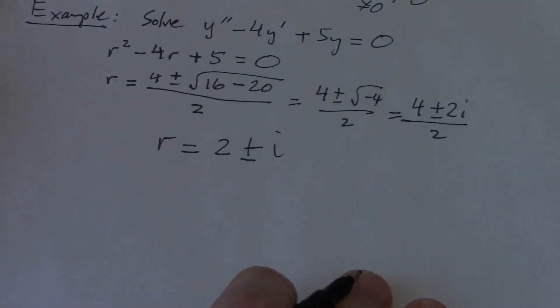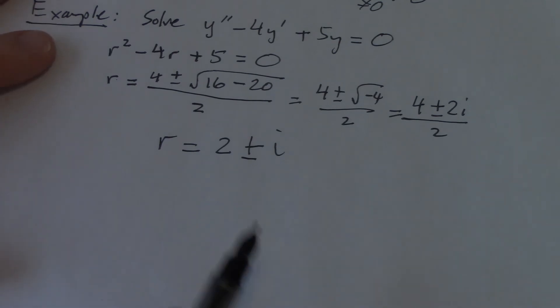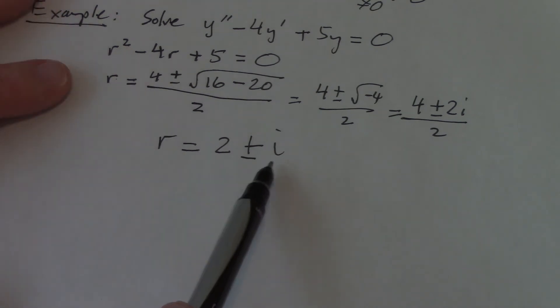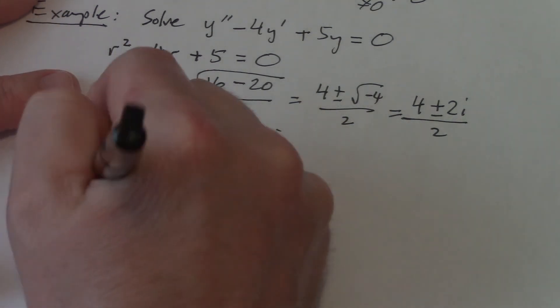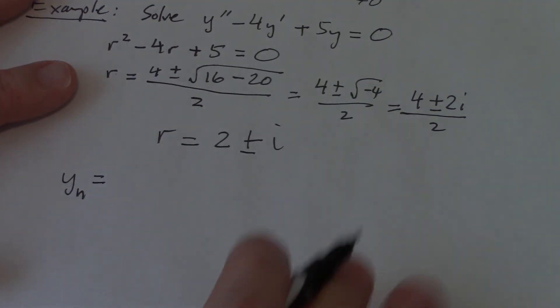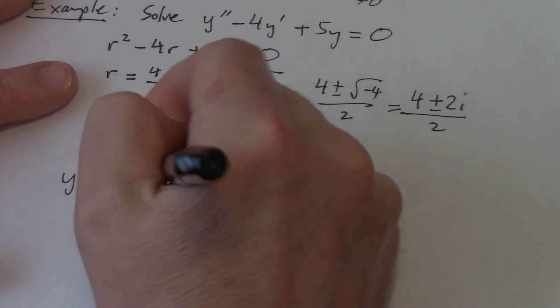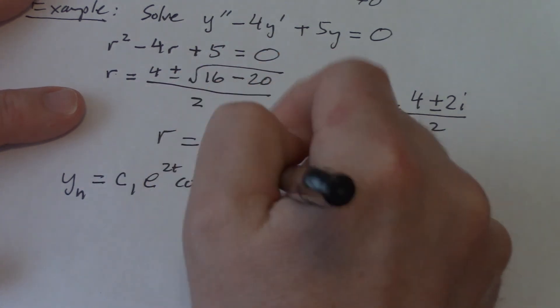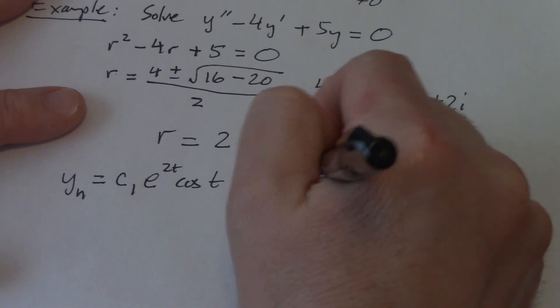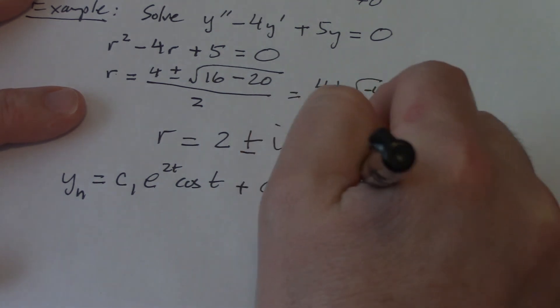That gives me that r equals 2 plus or minus i. It's good to sort of talk about what's going on here. What's the alpha and what's the beta? The beta does not include the i. So alpha is 2, beta is the coefficient of i, which is 1. Beta is never equal to something with an i in it, it's always a coefficient. So my homogeneous general solution is going to be c1 e to the 2t cos t plus c2 e to the 2t sine t.